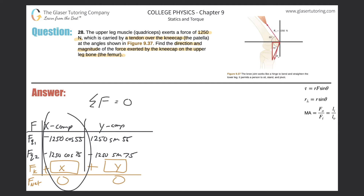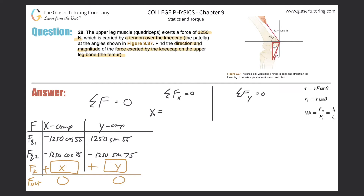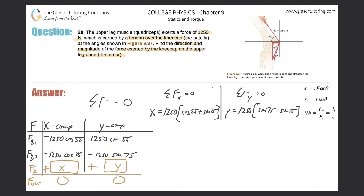The component table is very useful here because it organizes our thoughts into a two-track analysis. The sum of forces in the x-direction must equal zero, and the sum of forces in the y-direction must also equal zero. Solving for x: x equals 1250 times (cosine of 55 plus cosine of 75). For y: y equals 1250 times (sine of 75 minus sine of 55).